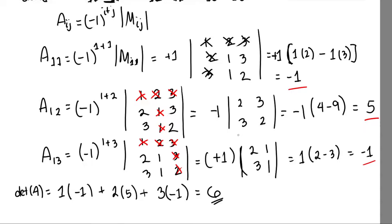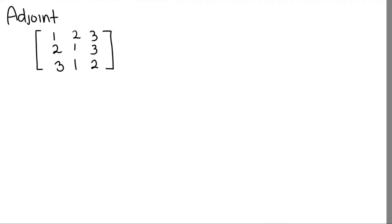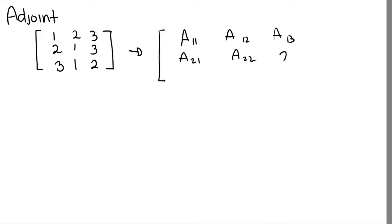You can take any other row or any other column and the answer would still be 6 if done correctly. Now let's solve for the adjoint. The adjoint of a matrix is the transpose of the cofactor matrix. For a 3×3 matrix, the adjoint is also 3×3. We need to find all cofactors: A_11, A_12, A_13, A_21, A_22, A_23, A_31, A_32, and A_33.